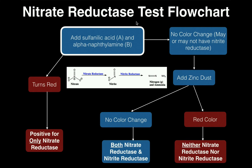This test is going to allow us to determine what set of enzymes we have. Do we have only the first one — only nitrate reductase? We can have both nitrate reductase and nitrite reductase, or we can have neither of them. The way we determine that is by following this flowchart on results day.